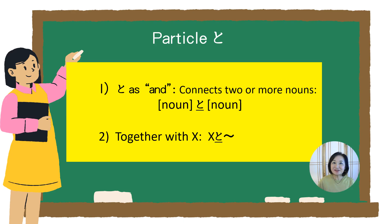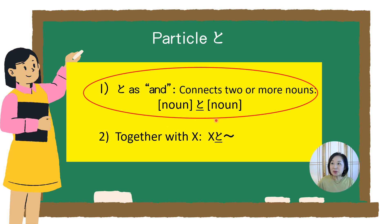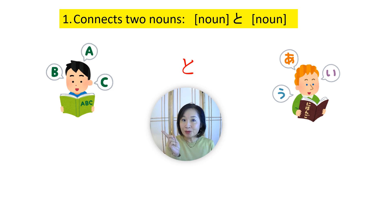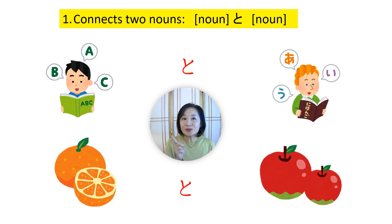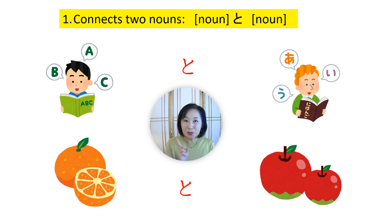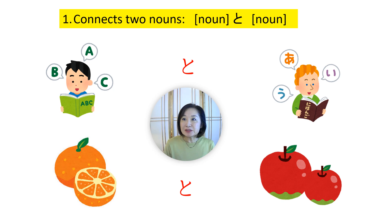Let's take a look at the first function of particle TO. TO is used to connect two or more nouns, similar to 'and' in English, so this particle is called a connecting particle. For example: りんごとおれんじ. Plural and singular don't matter in Japanese, so it could be just one apple and one orange or more. The particle TO is inserted between two items, like りんごと、バナナとおれんじ.